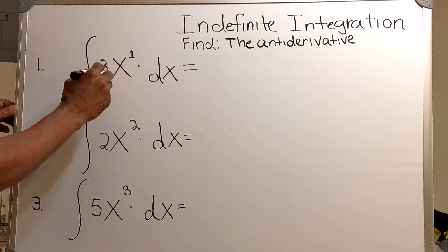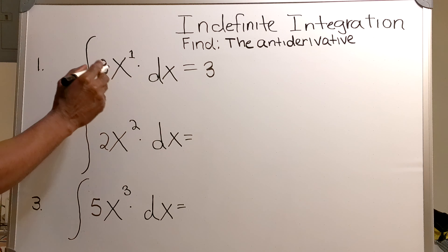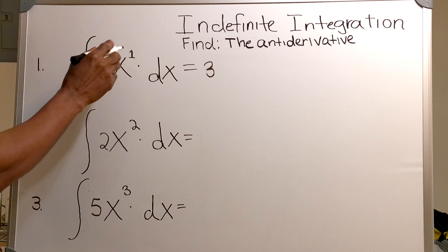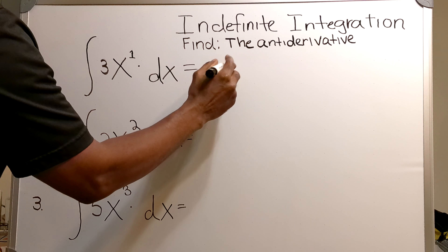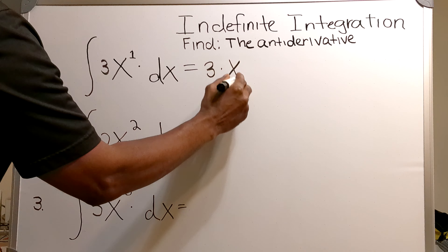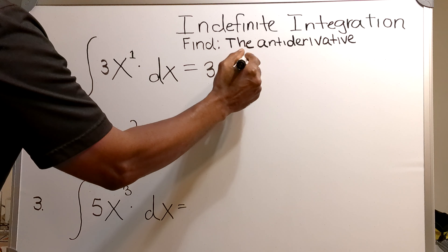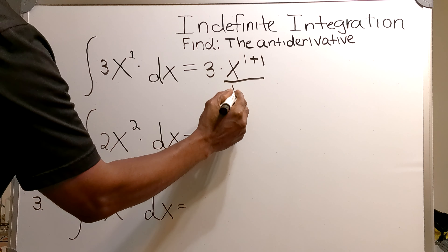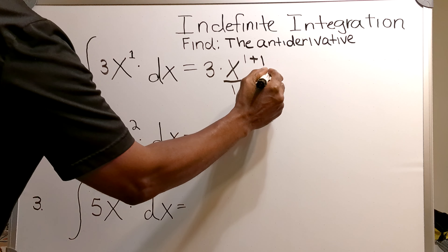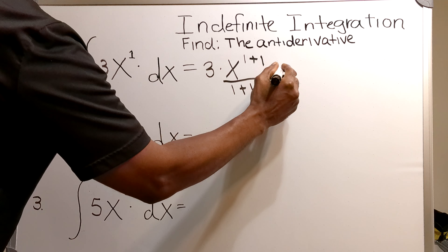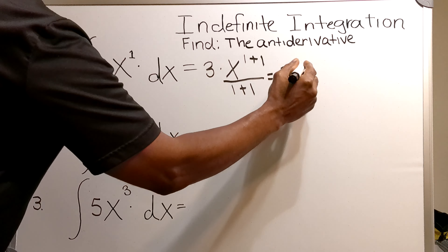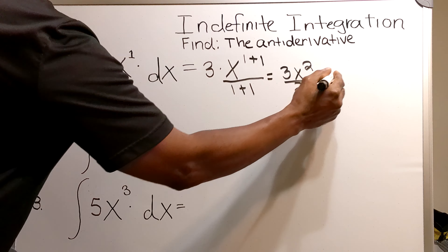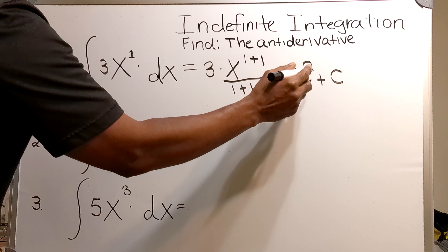The first step is for me to bring the 3 out. Then I multiply the 3 by the antiderivative of x to the first power. So then you divide by 1 plus 1. That will give you 3x squared over 2 plus c, the constant of integration.